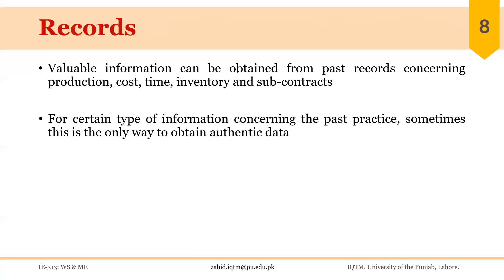Valuable information can also be obtained from past records concerning production, cost, time, inventory, and subcontracts. For certain types of information concerning past practice, sometimes this is the only way to obtain authentic data. There are different reports that are generated — production reports, quality reports — so you have a collection of data based on the past performance of a process or system. It can give valuable information about how the process was performed in the past and what issues existed, making it a useful source of information.